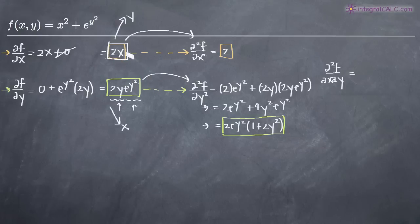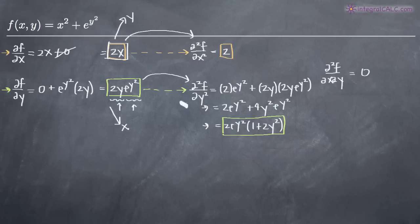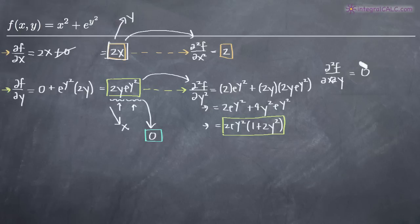So let's take the derivative of 2x with respect to y. The derivative of 2x with respect to y is just 0, because there's no y variable involved in the function 2x. So the mixed second order partial derivative is 0. Notice that if we took the derivative of 2y e to the y squared with respect to x, since there's no x variable involved, we would also get 0. Both ways confirm the mixed derivative is 0, which is what we want.